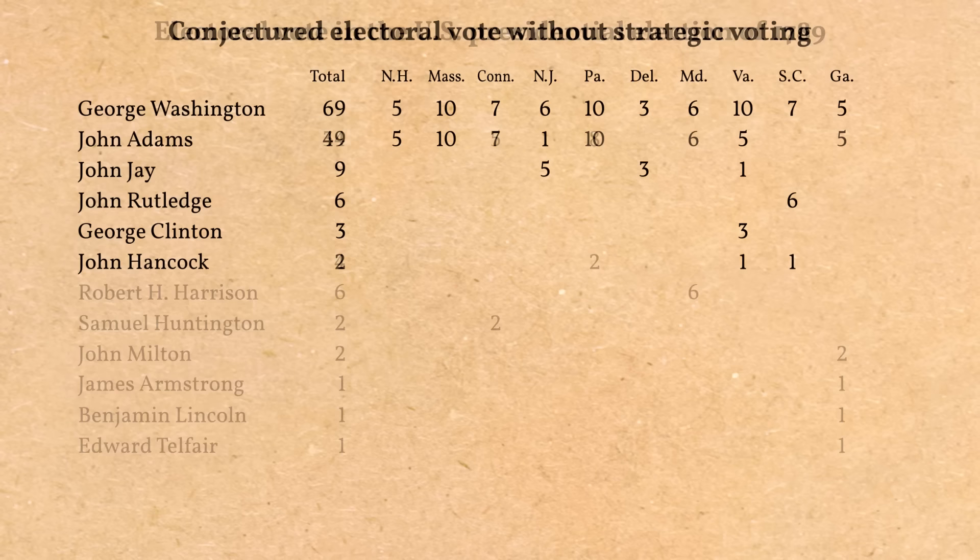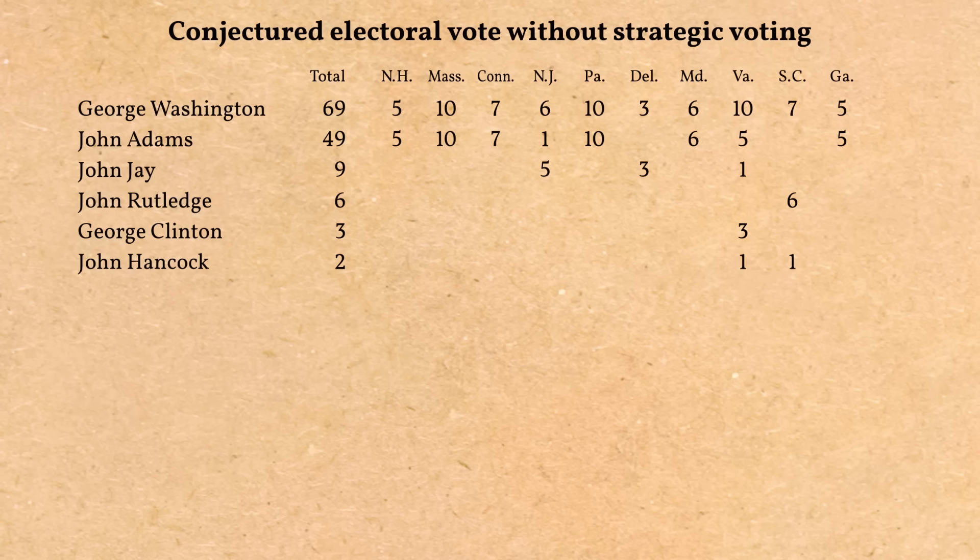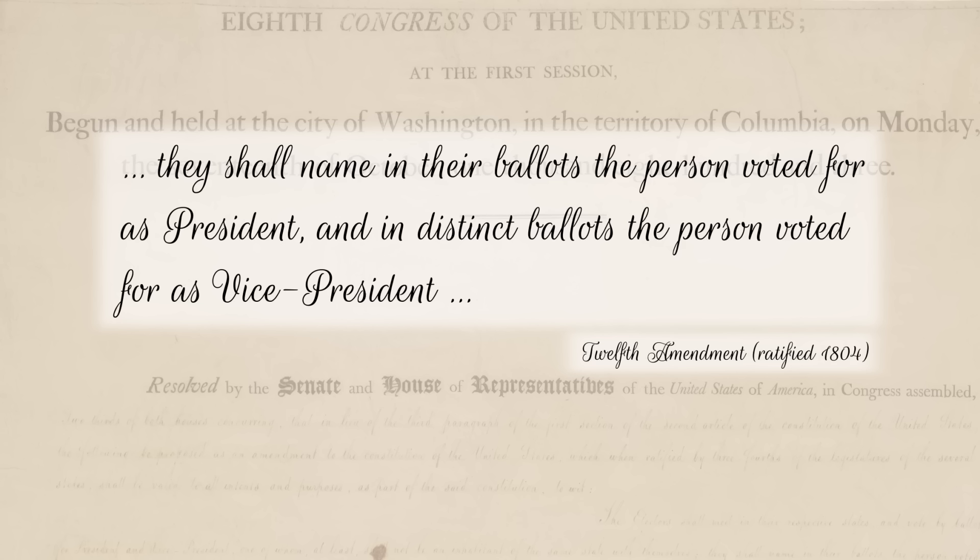This setup — where electors voted for two names without distinguishing which one they wanted for president and which for vice president — continued to be a problem in every presidential election after this until they fixed it. They finally fixed it in the 12th Amendment, which required electors to specify which person they were voting for as president and which as vice president.